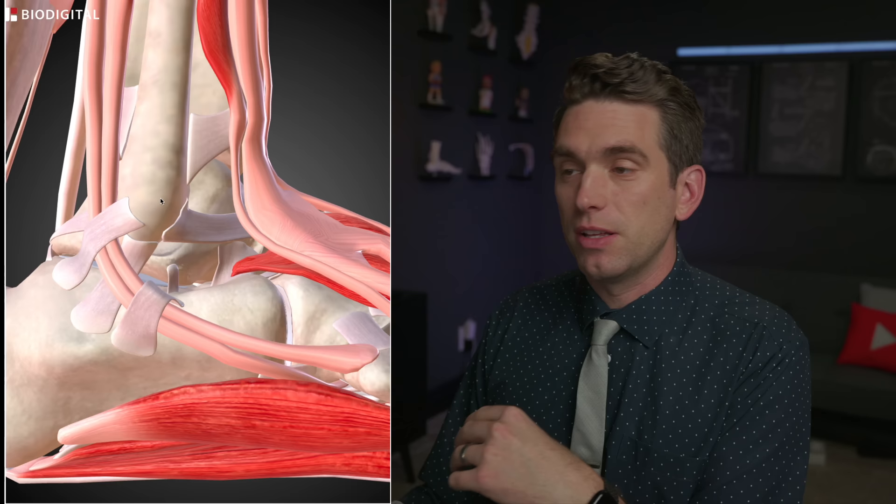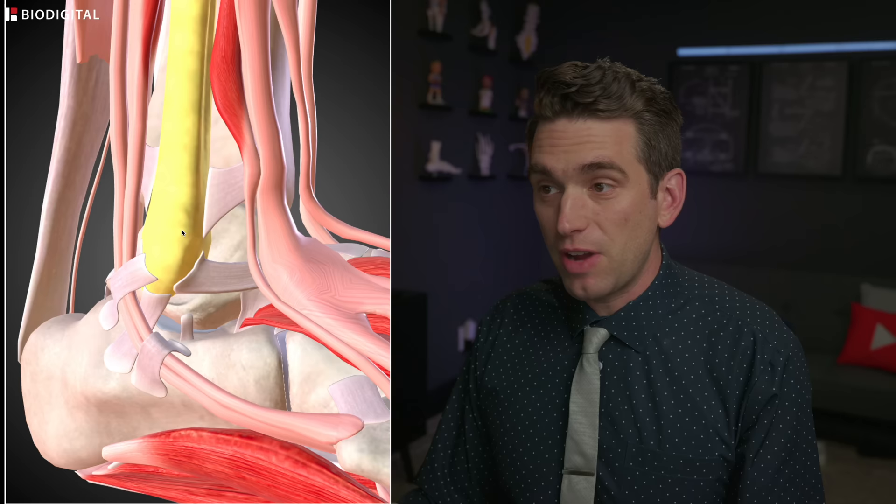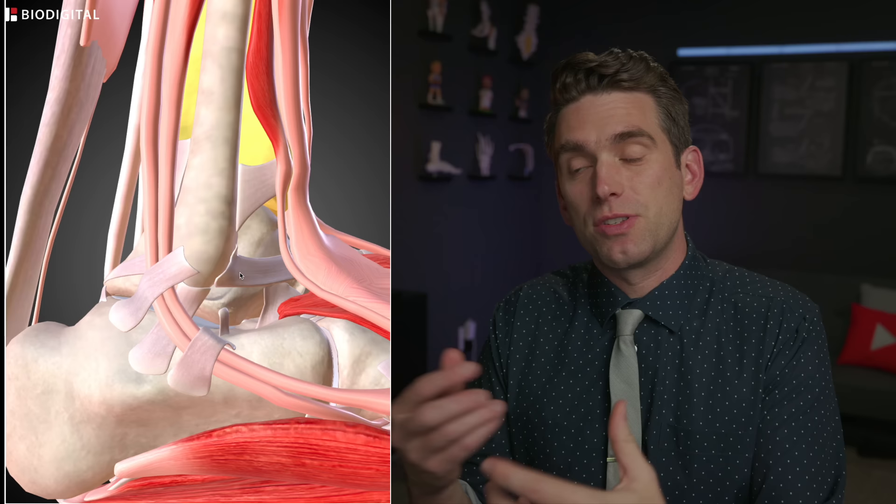Those tendons are held in place by the peroneal retinaculum, which acts like a seat belt to keep them in the proper position. Sometimes with an ankle sprain you can twist it in a way that tears this retinaculum and causes the peroneal tendons to displace anteriorly in front of the fibula — a less common injury but possible with inversion mechanisms. We also have to worry about contusions, cartilage injury, and fractures on the distal fibula or the medial malleolus. These are injuries that could result in a longer absence than just a ligament sprain.